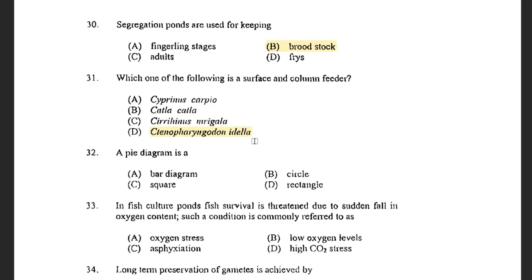Next question: A pie diagram is — options are a bar diagram, circle, square, and rectangle. The answer is circle.